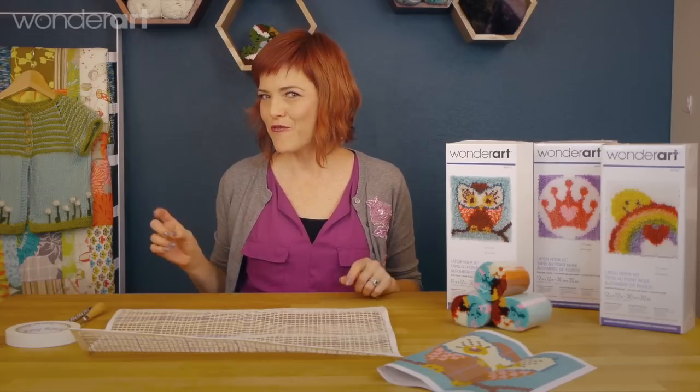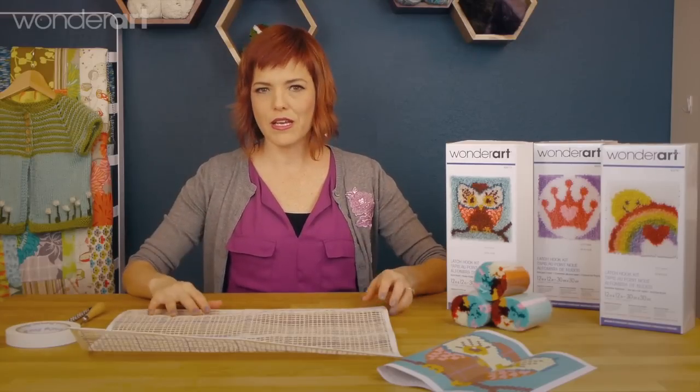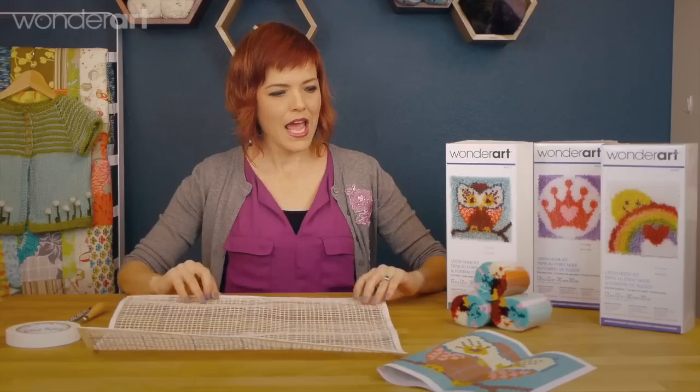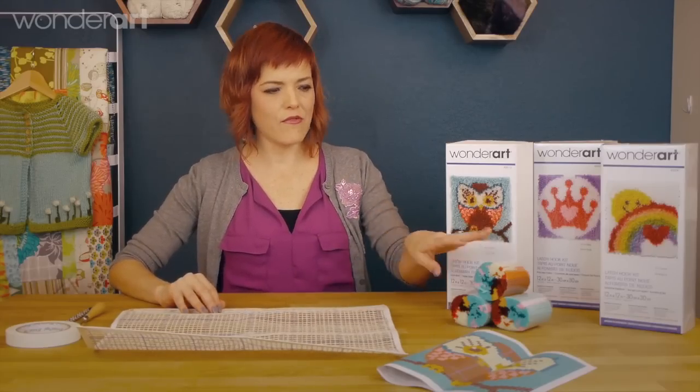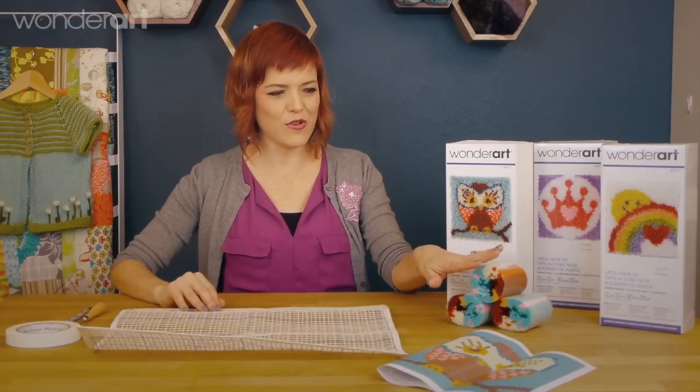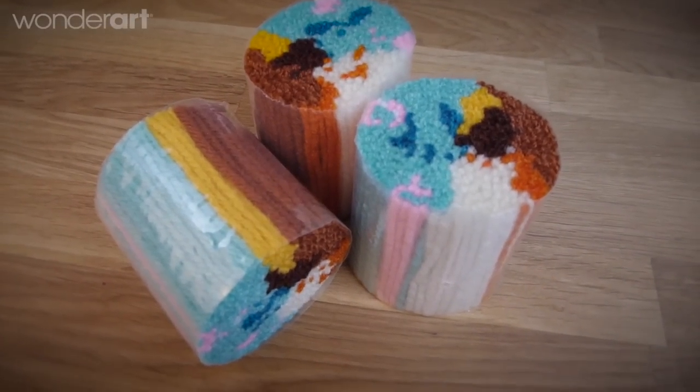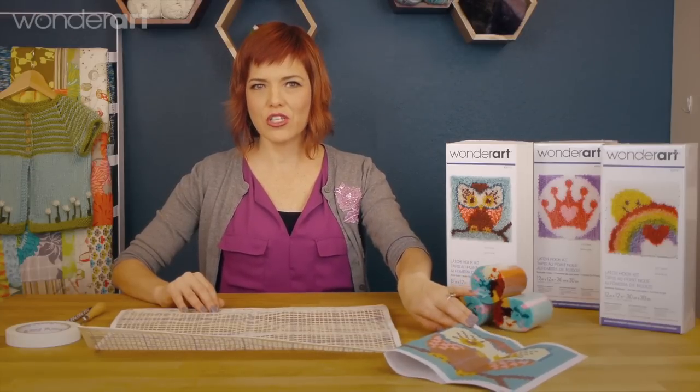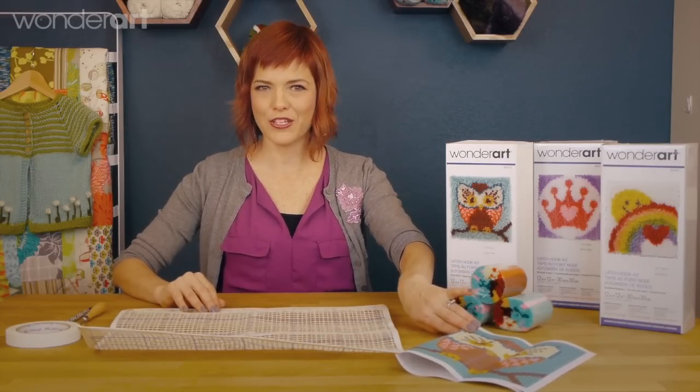The first thing that you're gonna need to know is what comes in the box. Every kit comes with a gridded piece of canvas and then you're going to come with several of these little yarn bundles and they'll all look exactly the same. Then you're gonna have your instructions which will include a fully colorized line-by-line chart and that's everything in the actual box.